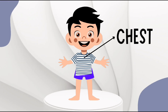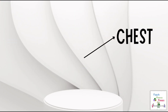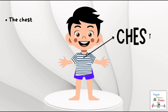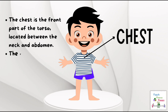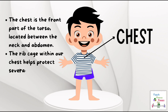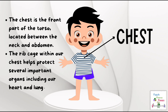Next is the chest. The chest is the front part of the torso located between the neck and abdomen. The rib cage within our chest helps protect several important organs including our heart and lungs.